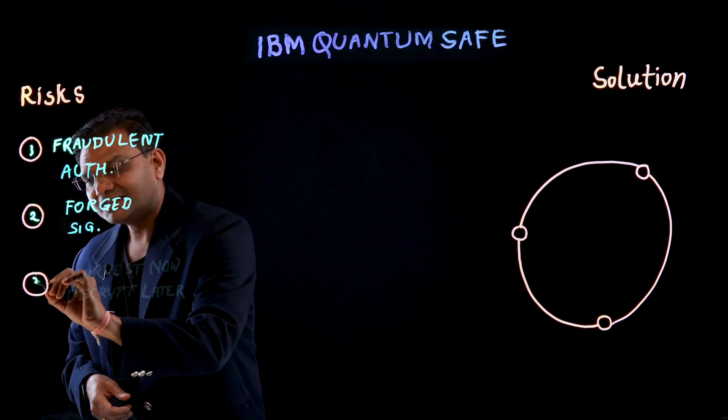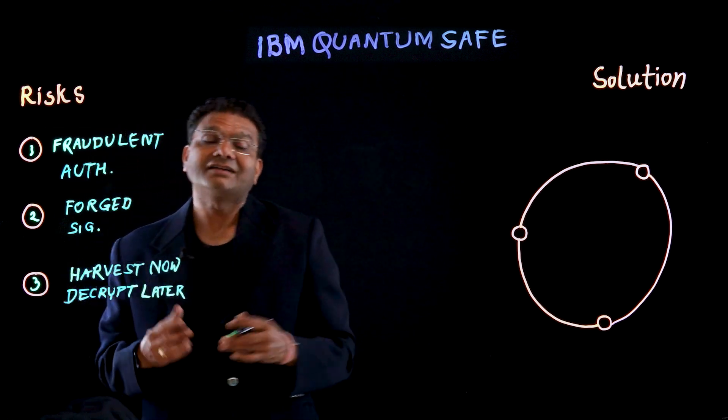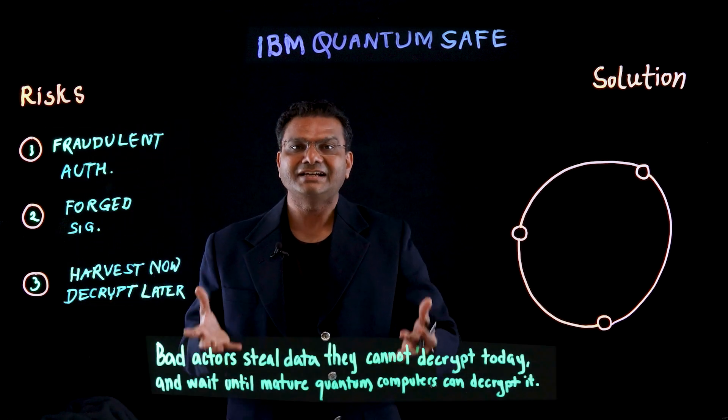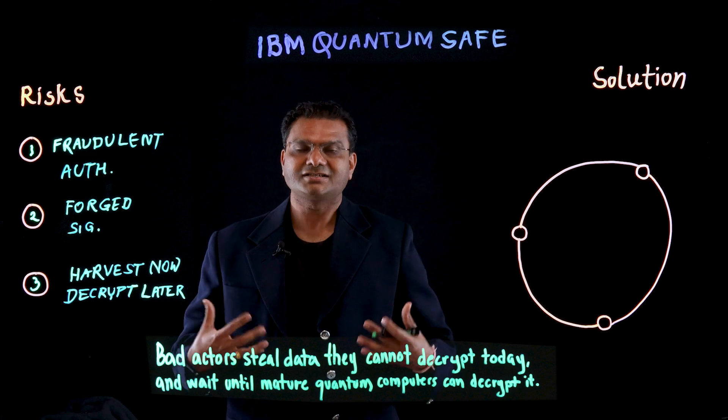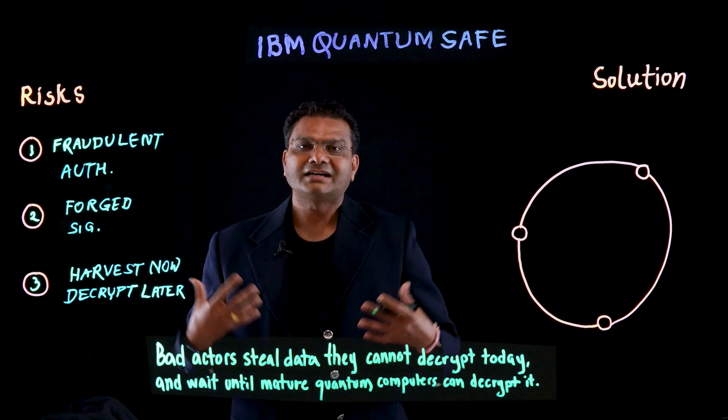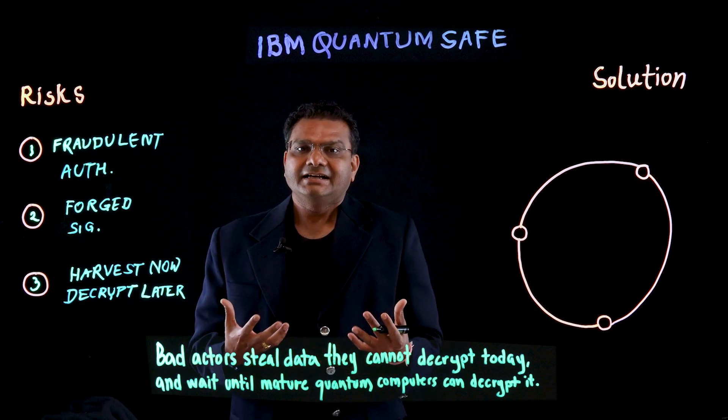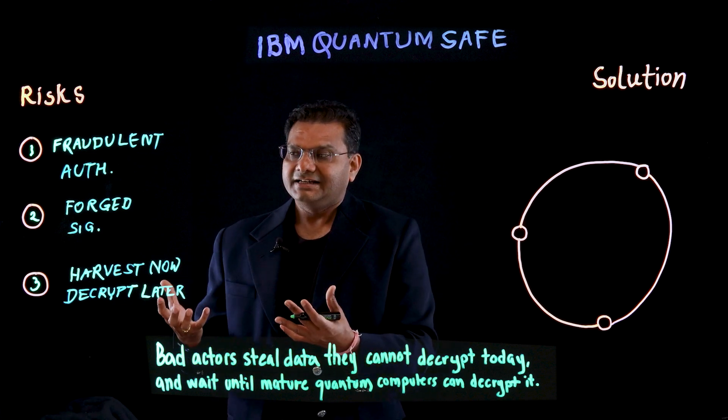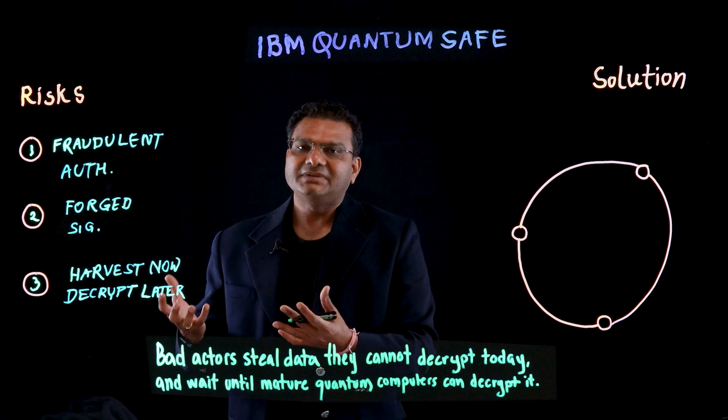The third thing they can do is harvest now, decrypt later, which is very important for us today. We understand that they cannot steal and decrypt the data today, but they will be sitting on it until quantum computers mature, and they will be able to decrypt it and find out the crown jewels from your enterprise.